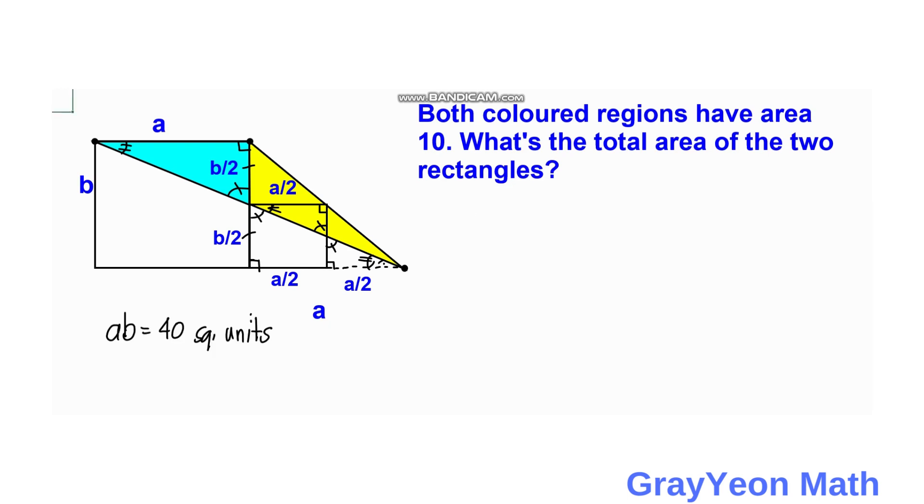Okay, so next we consider the area of the two rectangles. So by inspection, the area of the two rectangles is equal to AB plus the dimension for the smaller rectangle is A over 2 times B over 2. So the area is equal to AB plus AB over 4. But AB is actually 40 as we got earlier. So area is equal to 40 plus 40 over 4. So area is equal to 50 square units.